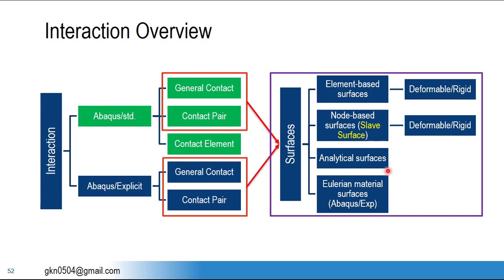Analytical rigid surfaces, element-based surfaces, and node-based surfaces may be deformable or rigid depending on the component. If you have a discrete rigid component and define surfaces by element, those surfaces will be rigid. If you have a deformable component, the resulting interaction surfaces will also be deformable. One important thing: node-based surfaces can only be used for the slave condition when defining interaction.